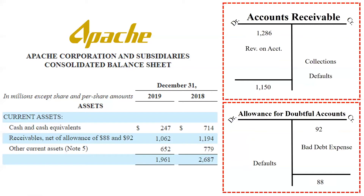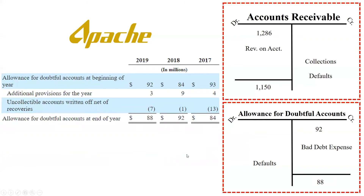That's all the information from the balance sheet. Next, we'll get more information about the allowance for doubtful accounts. Companies are required to provide details about this account — essentially the t-account — sometimes in a schedule called Schedule 2, titled 'Valuation and Qualifying Accounts.' In Apache's case, this table was provided in their accounts receivable footnote. It gives, for each year, the beginning balance, additional provisions, uncollectible accounts written off net of recoveries, and the ending balance.